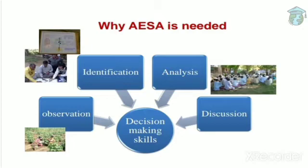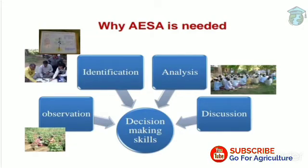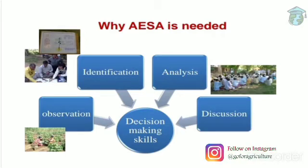For decision making in AESA, there are four important points: observation, identification, analysis, and discussion. For example, imagine you are a farmer and an officer comes to teach you the AESA process. First is observation — the main method is to observe the field, like what kind of crops you are growing, or what kind of pest outbreak is in your field. This is observation.